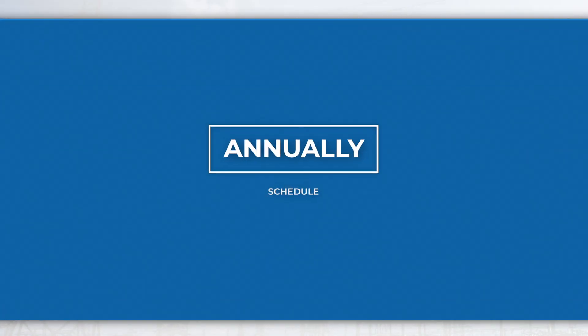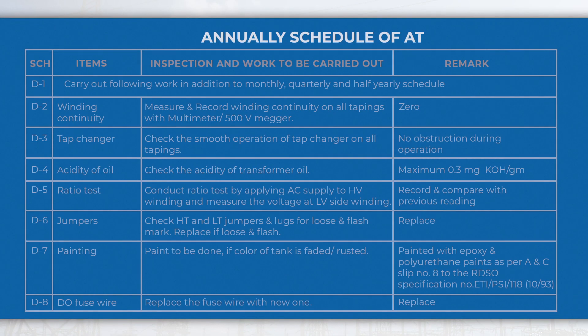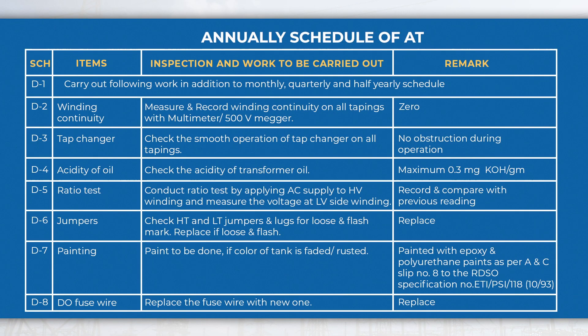In the annually schedule, perform activities like measuring winding continuity, checking the acidity of transformer oil, and conducting ratio test, etc., in addition to half-yearly, quarterly, and monthly schedule activities.